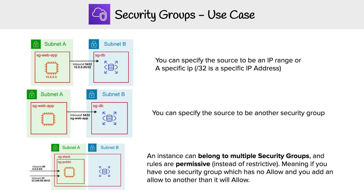Here I have three security group scenarios, and they all pretty much do the same thing, but the configuration is different to give you a good idea of variation on how you can achieve things. The idea is we have a web application running on an EC2 instance, and it is connecting to an RDS database to get its information, running in a private subnet.